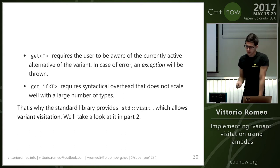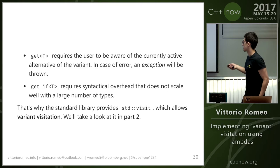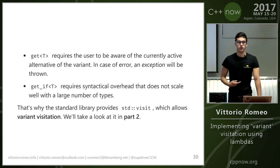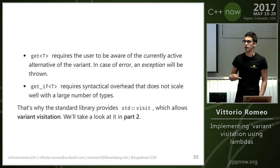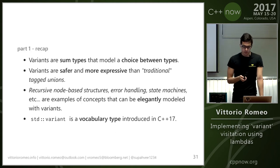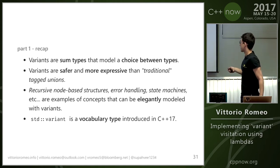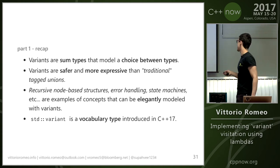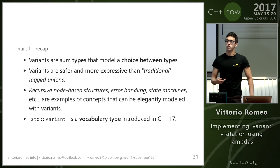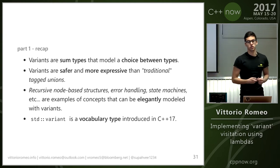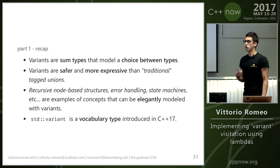These are reasons why the standard library provides std::visit, which allows visitation — a more powerful abstraction that safely accesses the active alternative. As a recap: variants are sum types that model a choice between types, they are safer and more expressive than unions, and there are lots of structures that can be elegantly modeled with variants. It's a vocabulary template introduced in C++17 — something you should be using in your interfaces and encourage as common knowledge between all C++ developers.